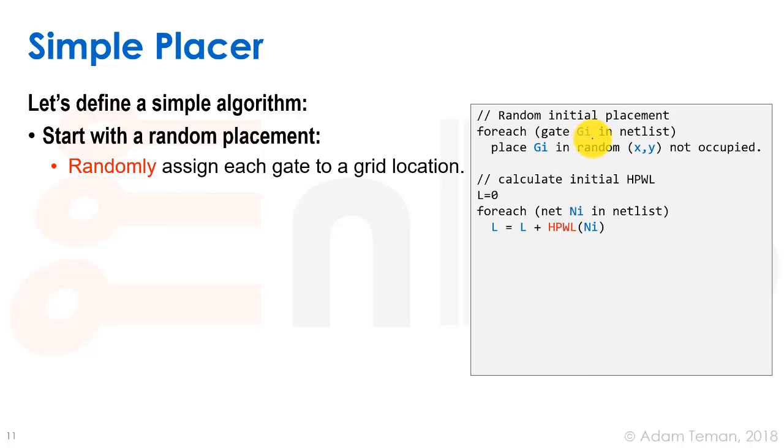This is pseudo-code for our design. For each gate, called Gi in our netlist, let's place Gi in some random (x,y) location that is not preoccupied by a previous iteration of our for-each loop.